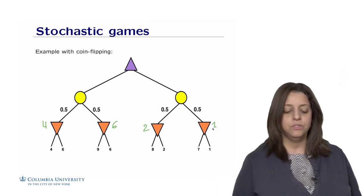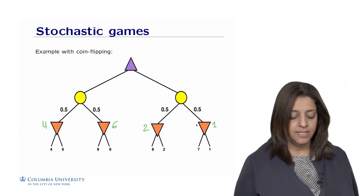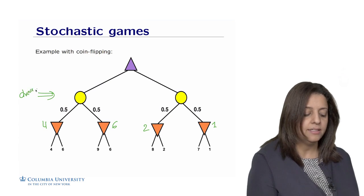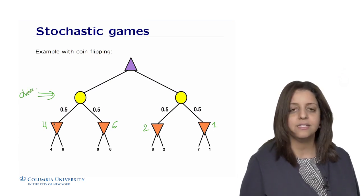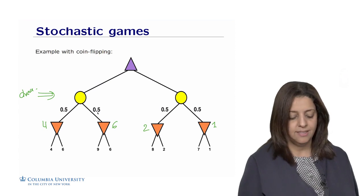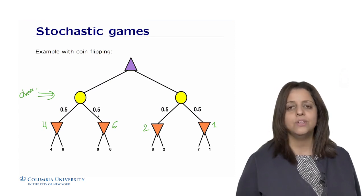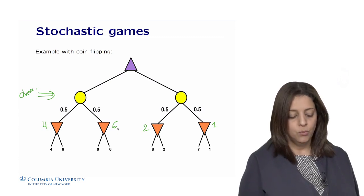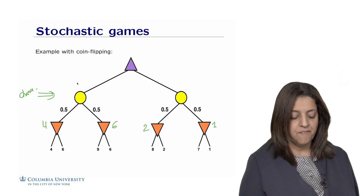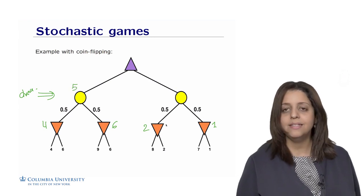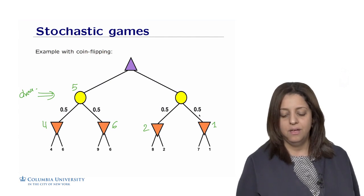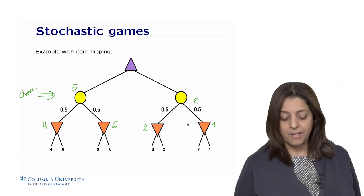Max will pick the maximum value of its children, but we have the chance node in the middle. That gives a 50% chance of getting this outcome and 50% chance of getting this outcome. So I'm going to use a weighted sum of these two outcomes and do the average of 4 and 6, which leads us to 5. And here it's 2 plus 1 is 3 divided by 2.